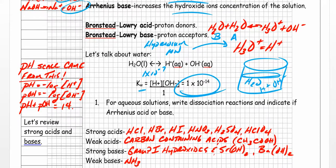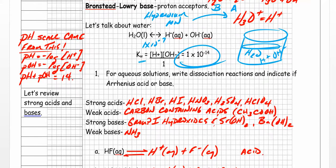It was actually a Danish scientist who invented the pH scale - his name was Soren Sorensen. He did it because he was tired of writing 1 × 10⁻¹⁴ or 1 × 10⁻⁷ while studying acidity and basicity. He defined pH as minus the log of the hydrogen ion concentration. Similarly, pOH equals minus the log of the hydroxide ion concentration, and pH plus pOH equals 14.